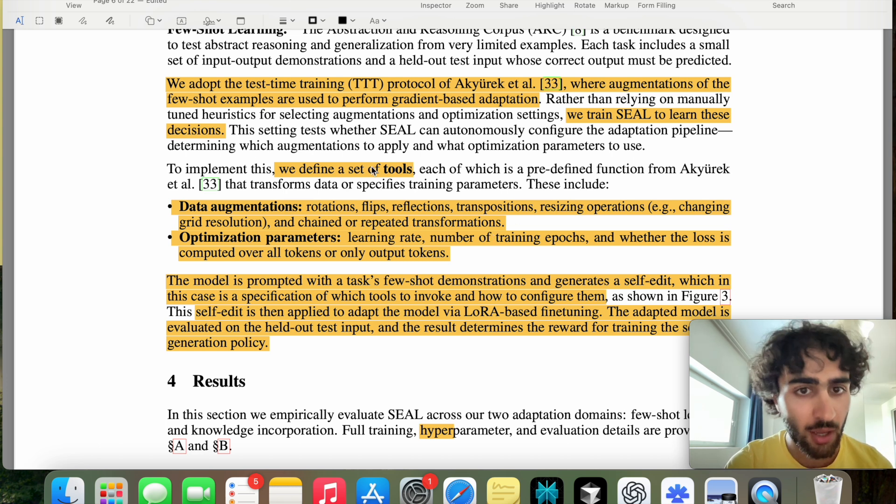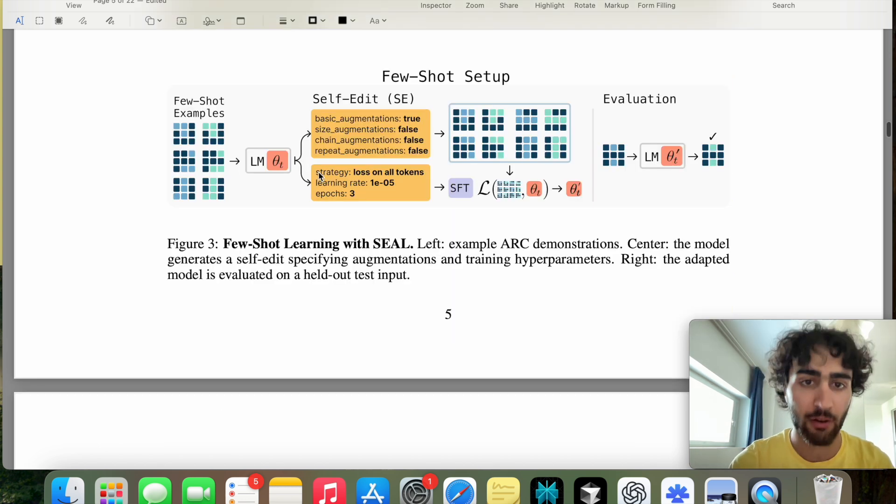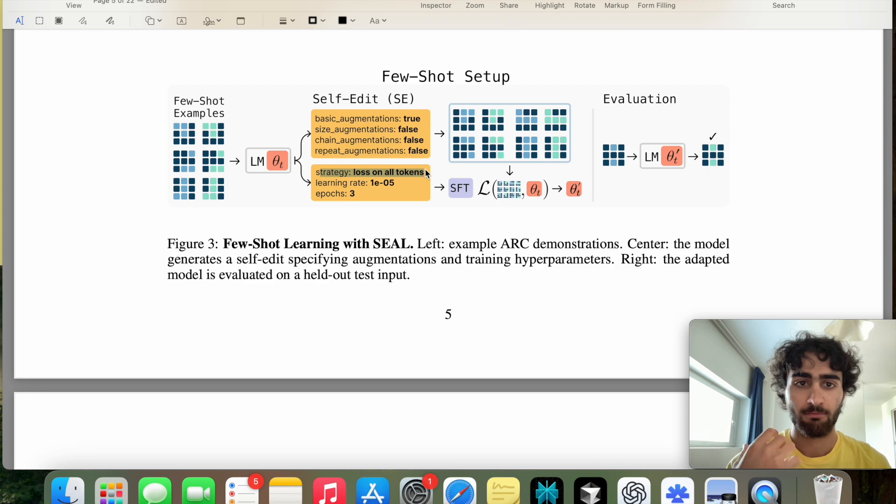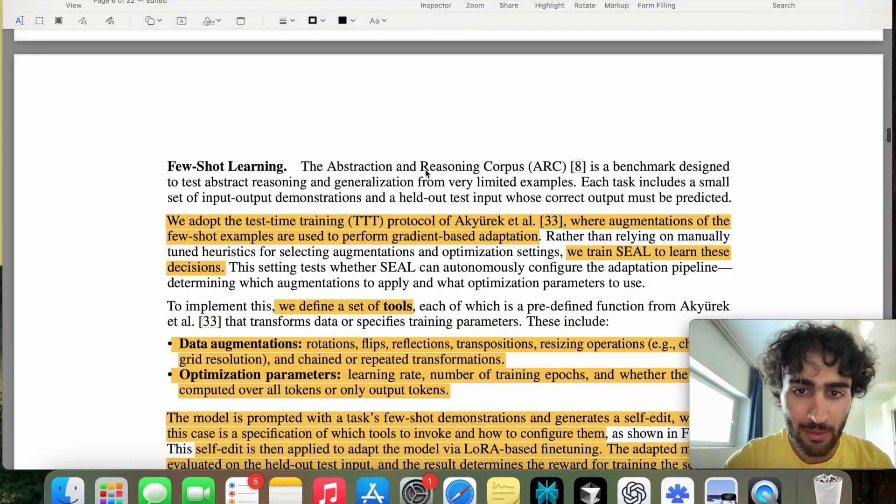So rotation, flips, reflections, transpositions, et cetera. And then there's also the optimization parameters. So learning rate, number of training epochs, and whether loss is computed over all tokens or only output tokens. Oh yeah, they're here. The strategy is loss on all tokens. I'm not entirely sure what this refers to for SFT, but yeah, if somebody knows, then please put that in the comment section, actually.